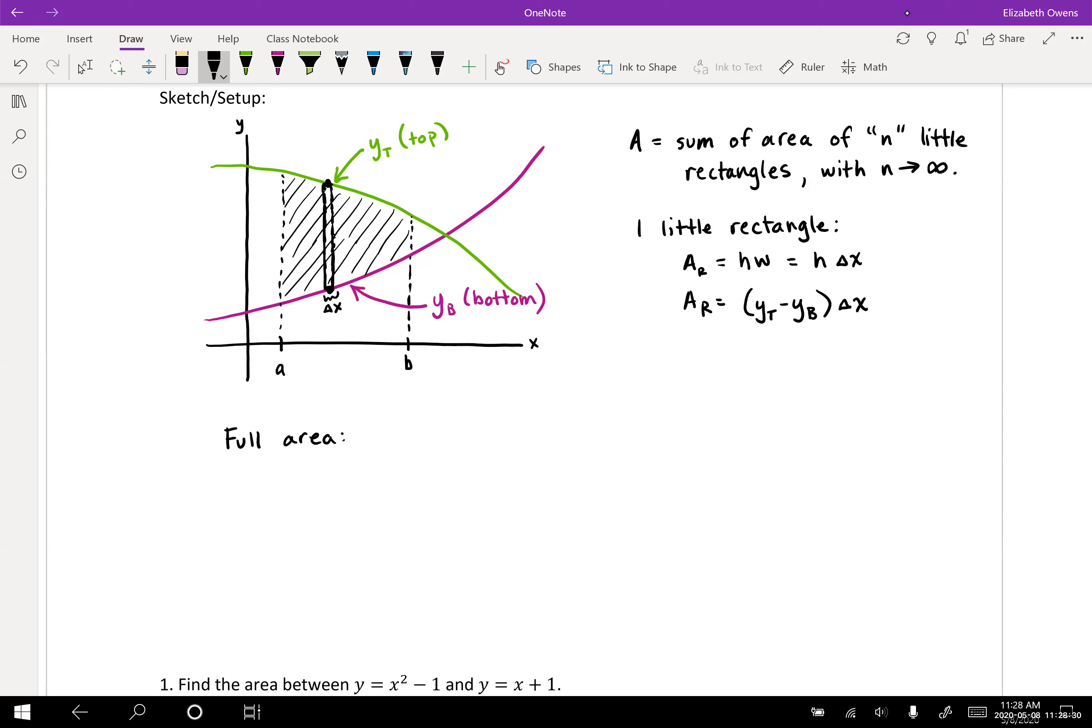So full area A is going to be the limit as our number of rectangles n goes to infinity. It's going to be a Riemann sum, summation from k equals one to n. And then we're going to put in our areas of the rectangles: yt minus yb delta x. So when we evaluate that limit, this is our Riemann sum process, taking the limit of that Riemann sum, we know this leads to an integral of the function inside the Riemann sum.